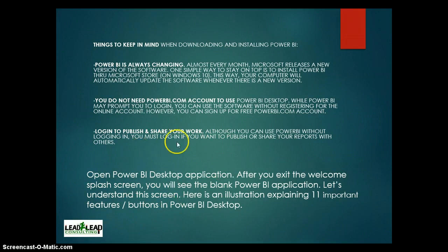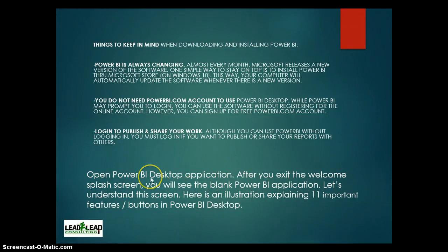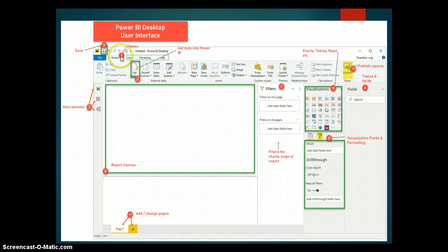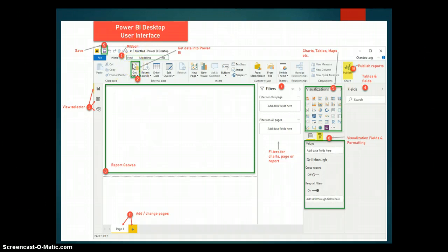Today I'm also going to show you the Power BI interface. When you open your Power BI Desktop application, after you dismiss the welcome screen, you get the Power BI user interface. I'm going to explain the most important features. The first one is called the Ribbons, where you have your Home, View, and Modeling tabs. Under the Ribbons there is a button called Get Data — this is where you load data into Power BI.